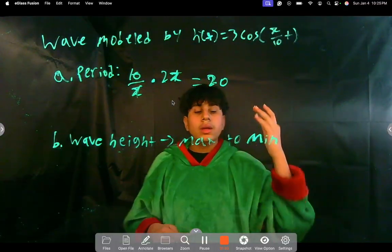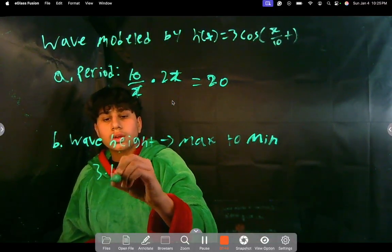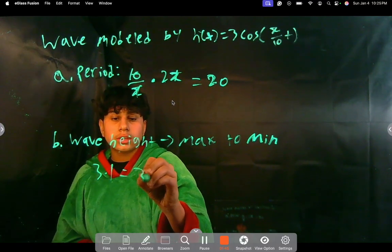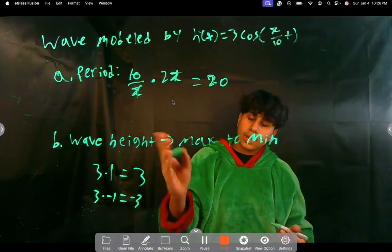So it's 3 times 1—and so that's the highest—and then 3 times -1, which is -3, and that's the minimum. So that's the maximum and the minimum. That's how you find those points.